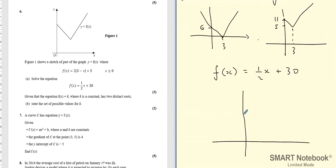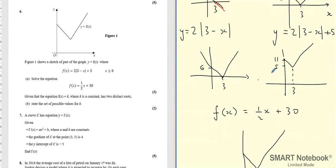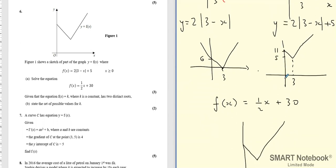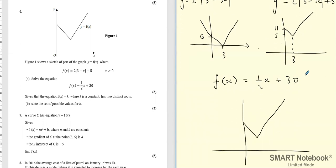This is 11 goes down as low as 5 and then goes up as a gradient of positive 1. This is 11 and this is 5.